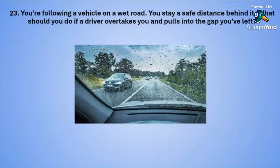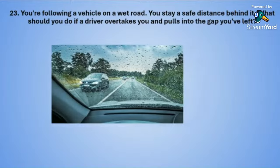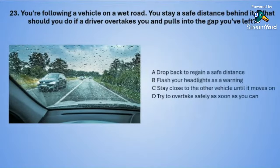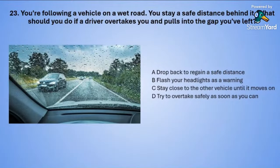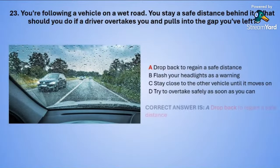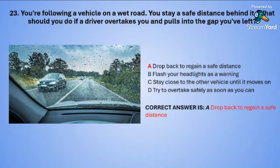Question twenty-three: You are following a vehicle on a wet road, staying a safe distance behind it. What should you do if a driver overtakes you and pulls into the gap you've left? A: drop back to regain a safe distance. B: flash your headlights as a warning. C: stay close to the other vehicle until it moves on. Or D: try to overtake safely as soon as you can. The correct answer is A — drop back to regain a safe distance.